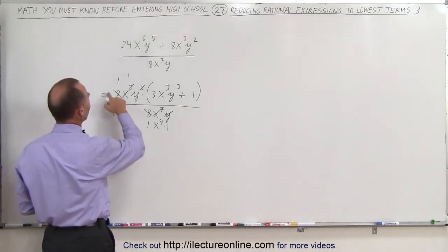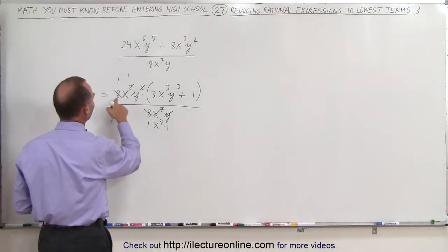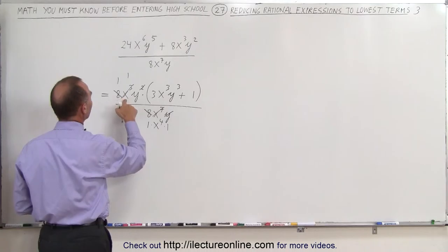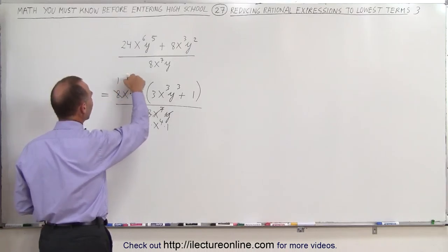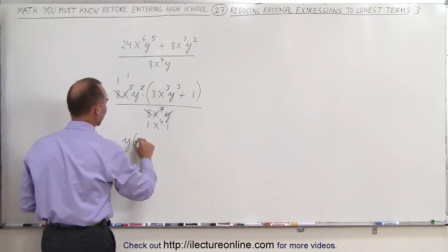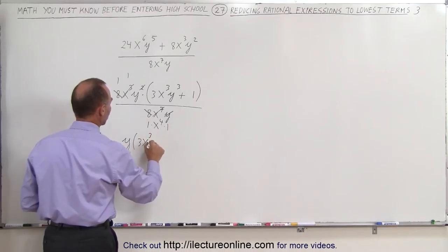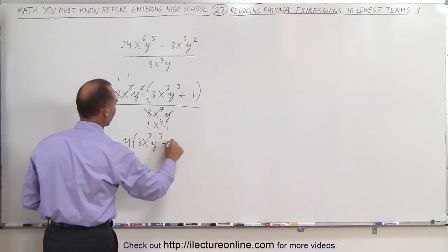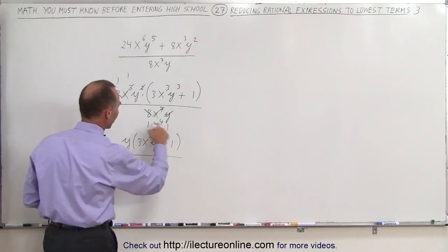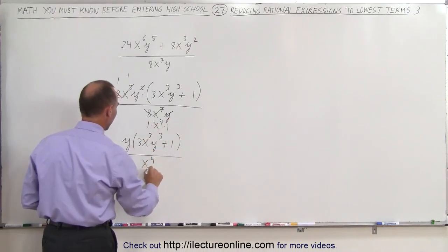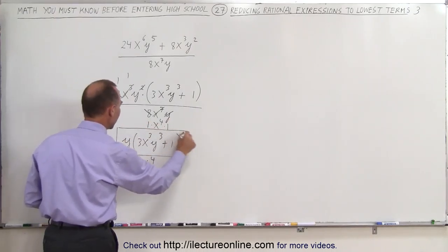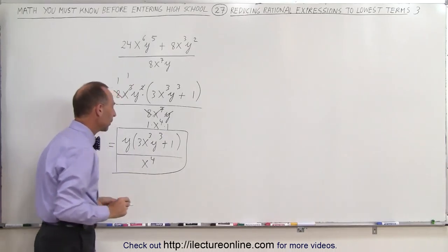We can rewrite this as, in the numerator, all we have left, the 8 became a 1, the x cubed became a 1, so it's 1 times 1 times y, so we have a y times 3x cubed y cubed plus 1, and in the denominator, all we have left is an x to the 4th power, and that would be the most reduced form that we can get this in.